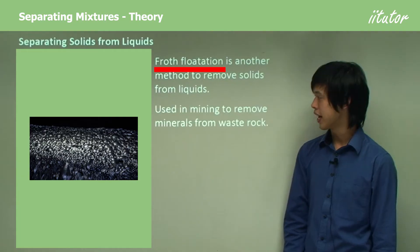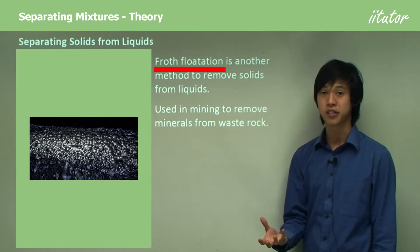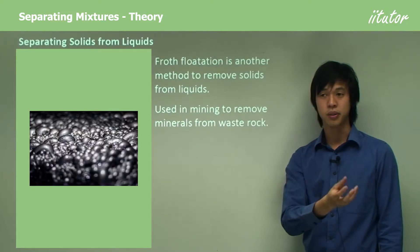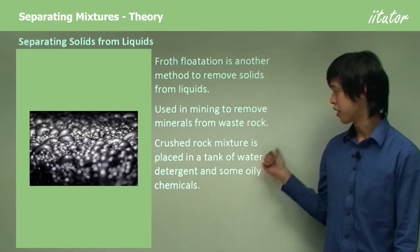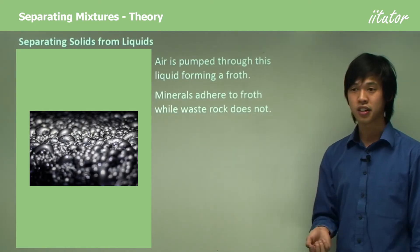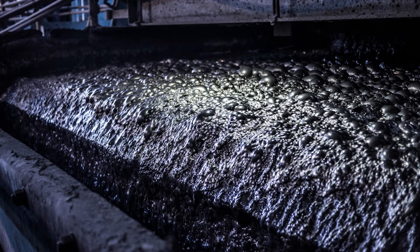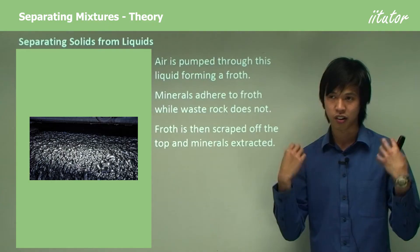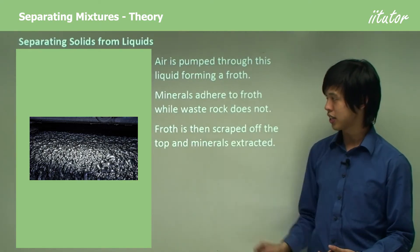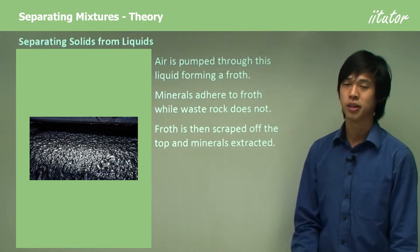Another way to remove solids from liquids is froth flotation, which we use in mining to remove minerals from waste rock. Often what happens in mineral refining is we dissolve the rock in some kind of chemical, and try to remove impurities while the metal stays as a solid. Crushed rock mixture is placed in a tank of water, detergent, and oily chemicals. Air is pumped through forming a froth — minerals adhere to the froth while waste rock falls to the bottom. The froth is then scraped off the top and the minerals are extracted.